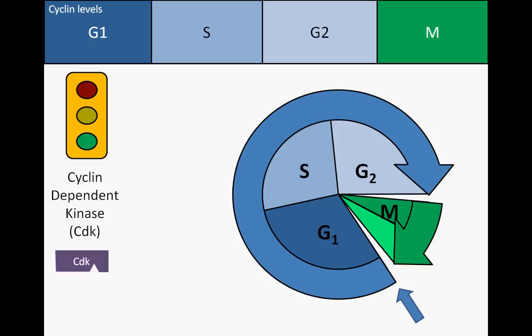Some cyclin levels rise throughout the course of interphase and peak during early M phase. The cyclin-CDK complex that specifically advances the cell from G2 into M phase is called maturation promoting factor, or MPF.